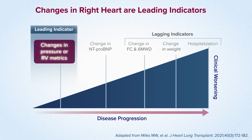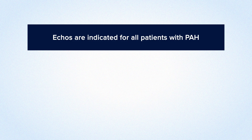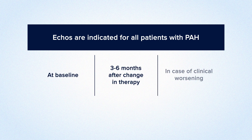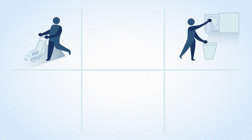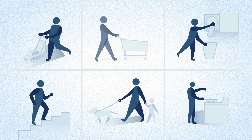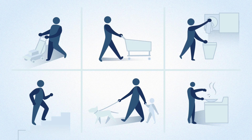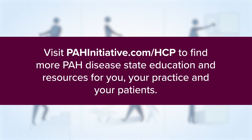Treatment would be expected to benefit right heart function early, thereby improving overall patient function and reducing risk of disease worsening events. Because changes in the right heart can be seen before clinical decline, current treatment guidelines recommend echocardiography at baseline, with therapy changes and clinical worsening. Echos may also be completed every three to six months in stable patients. Delaying therapy as little as six weeks, whether initial or sequential combination, can have a detrimental impact on patient outcomes. Patients may experience early improvement in their condition, with notable increases in function achieved within as few as four to six weeks of initiating prostacyclin replacement therapy.